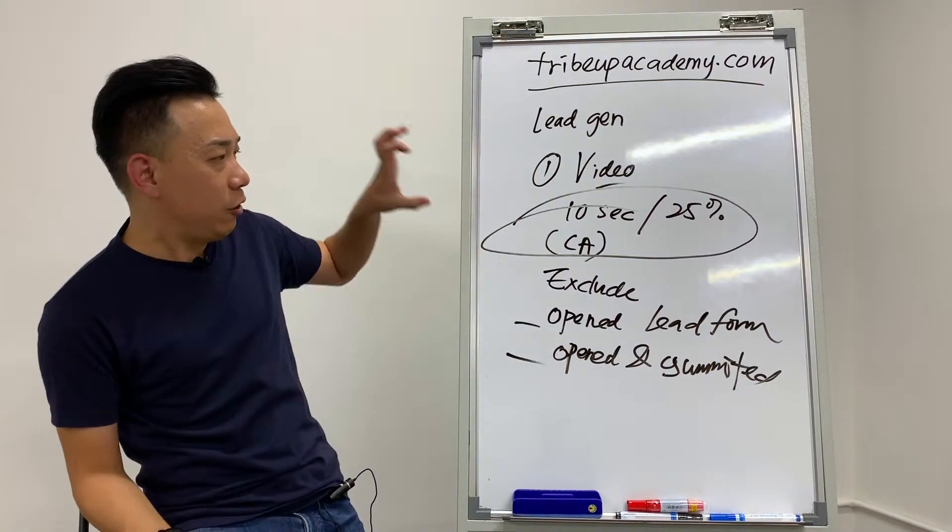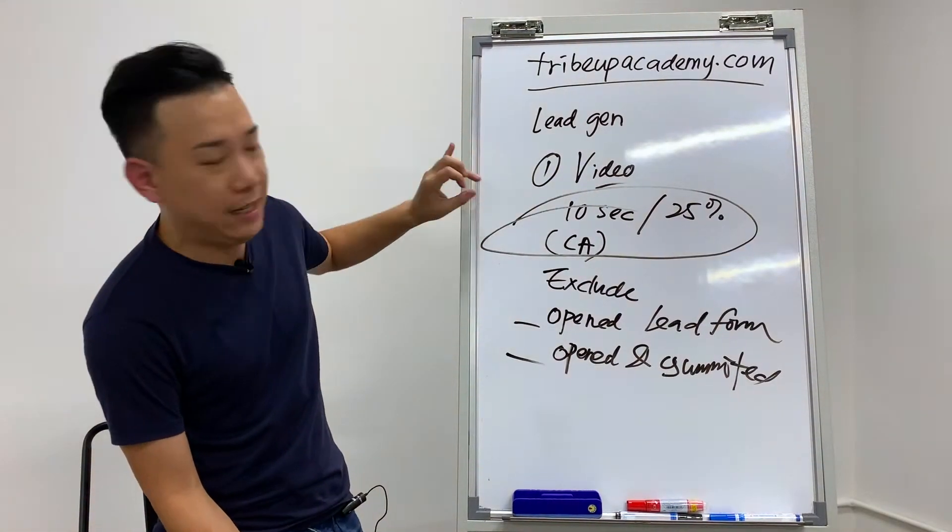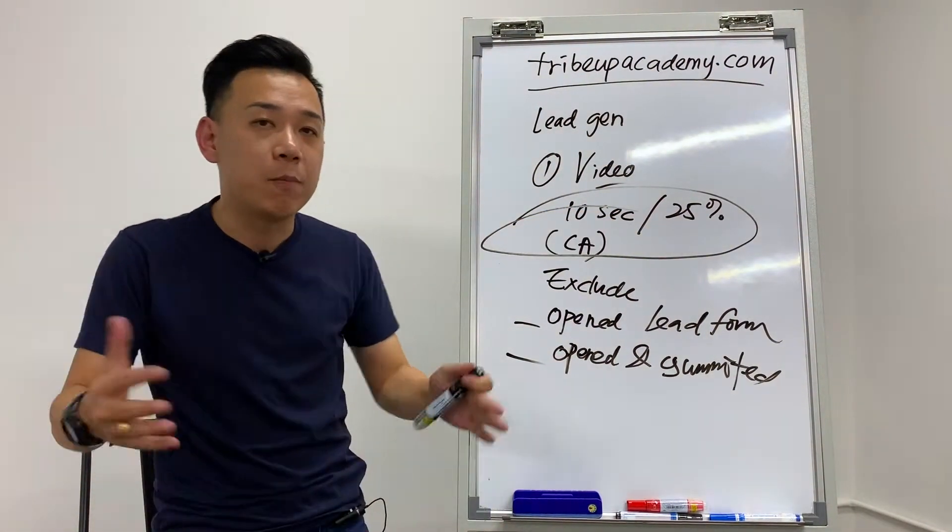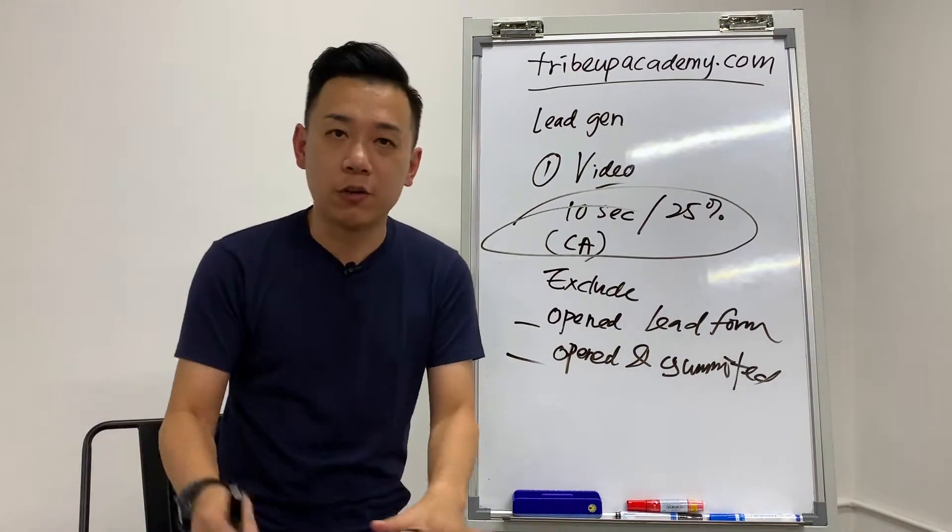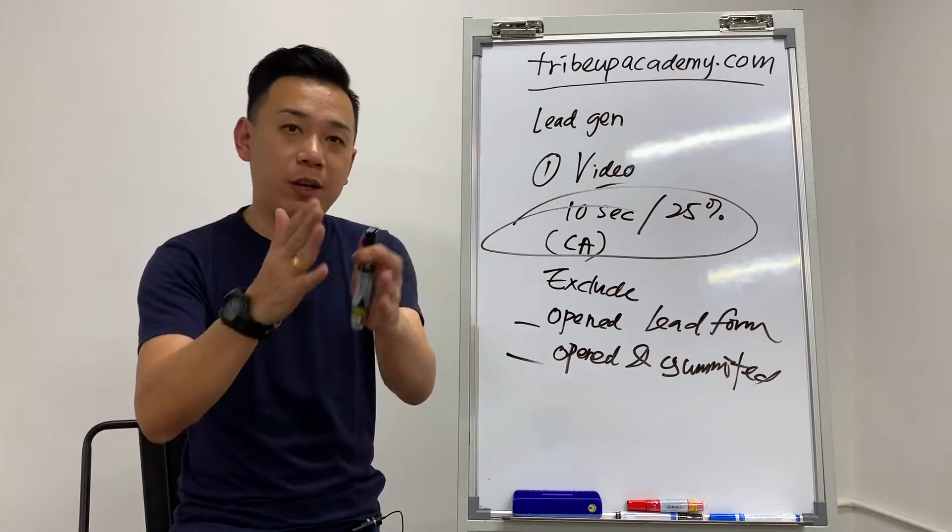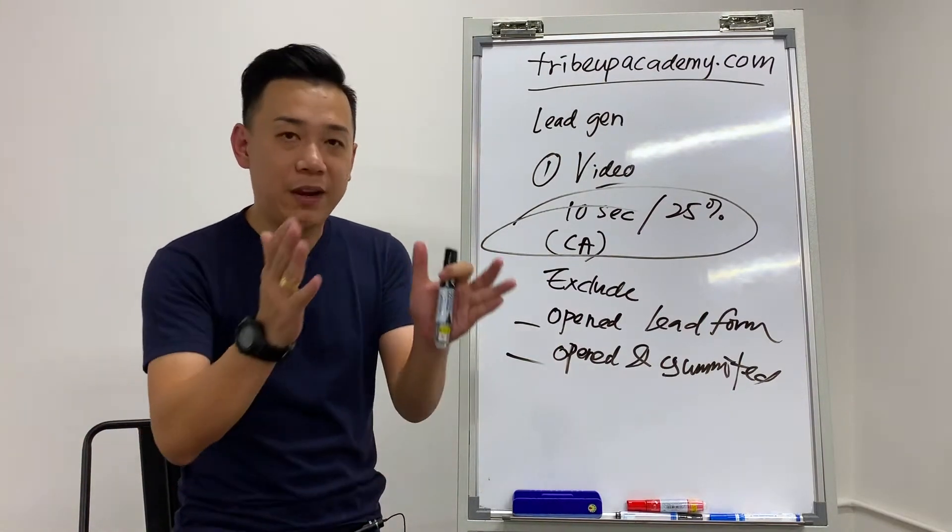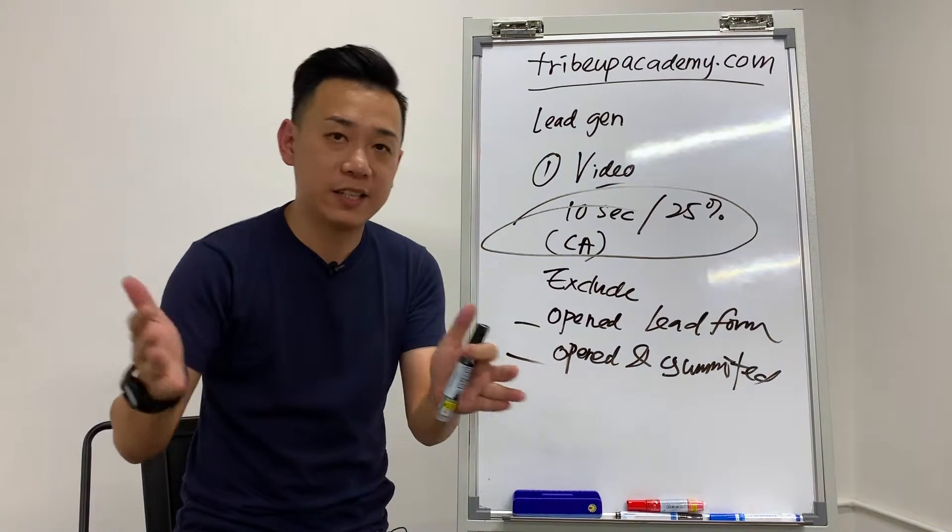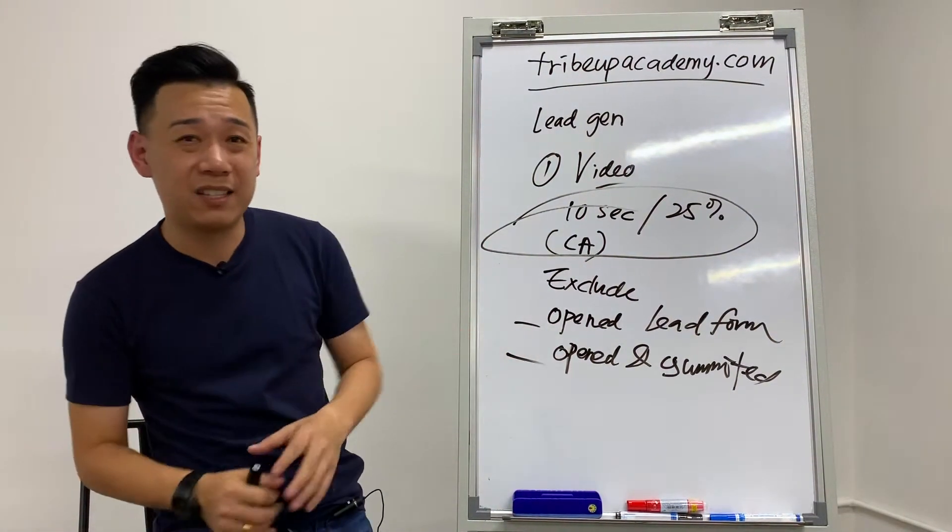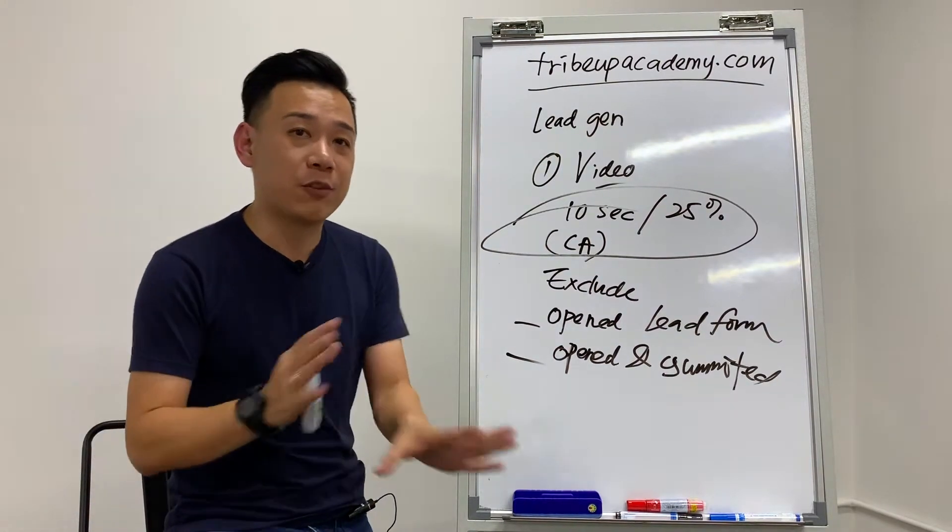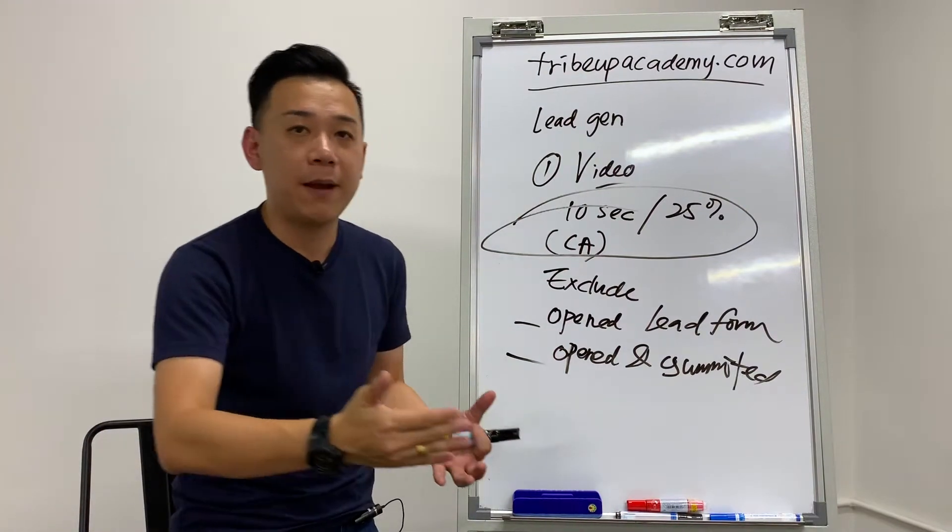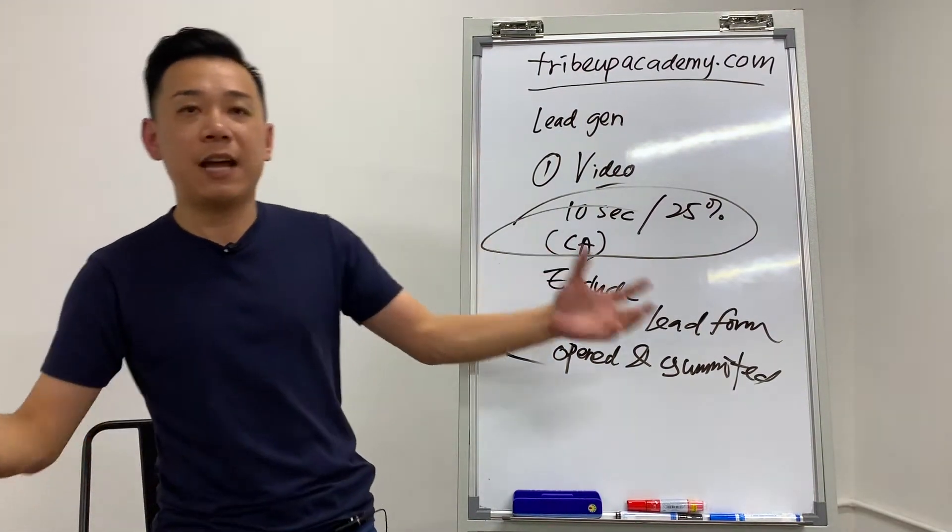Those people who have submitted, of course no brainer you have to exclude them out. In order to reach evergreen campaign, you use this mechanism. Use video first and then you use 10 second or 25% exclusion. That will make sure that those people who have watched your video up to 10 seconds, or if you do a still image video, if you have a five second still image video, 25% means they have watched one second or one and a half seconds. That's already fulfilling the criteria of exclusion, which the whole campaign will automatically exclude them from seeing your advertisement ever again.